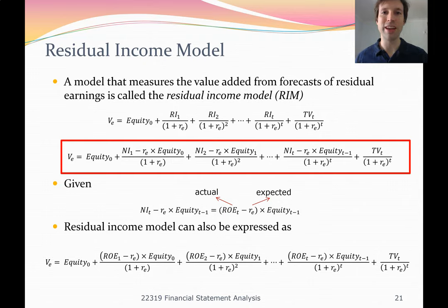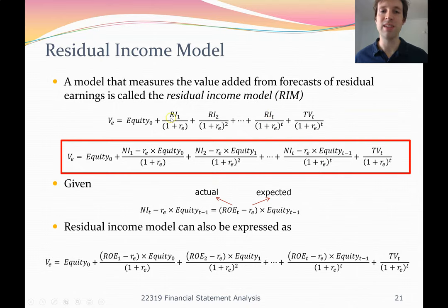The residual income model formula says the value of a firm's equity equals their owner's equity at time zero from the balance sheet, plus RI in year one divided by one plus RE, plus RI in year two divided by (1 + RE) squared, and so on — similar to the dividend discount model, except we discount residual income each year rather than dividends. We start by using the balance sheet as a foundation, then discount any abnormal earnings each year, and add a terminal value at the end.